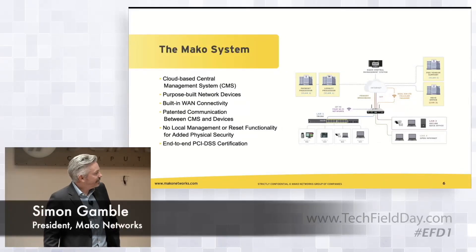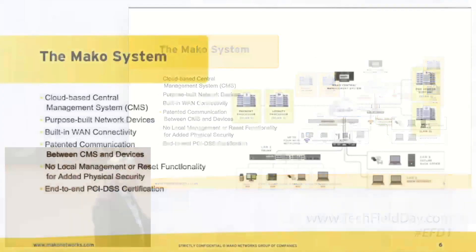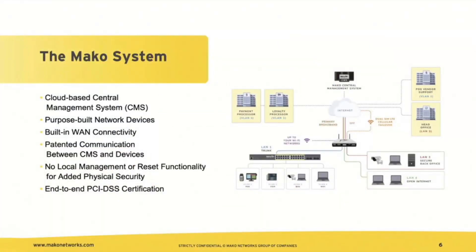Talking a little bit about how a network might be deployed at a customer location: the Mako Edge device will connect a store to the primary broadband that a customer has delivered to it, and typically utilize the built-in cellular connection to ensure that that site is connected and stays connected for as much as possible.